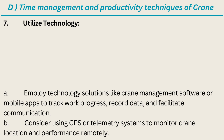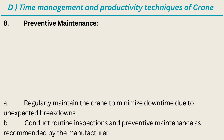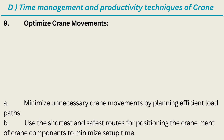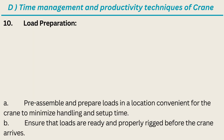Seventh: Utilize Technology — use technology solutions like crane management software or mobile apps to track work progress, record data, and facilitate communication. Consider using GPS or telemetry systems to monitor crane location and performance remotely. Eighth: Preventive Maintenance — regularly maintain the crane to minimize downtime due to unexpected breakdowns. Conduct routine inspections and preventive maintenance as recommended by the manufacturer. Ninth: Optimize Crane Movements — minimize unnecessary crane movements by planning efficient load paths. Use the shortest and safest routes for positioning the crane. Tenth: Load Preparation — preassemble and prepare loads in a location convenient for the crane to minimize handling and setup time. Ensure that loads are ready and properly rigged before the crane arrives.